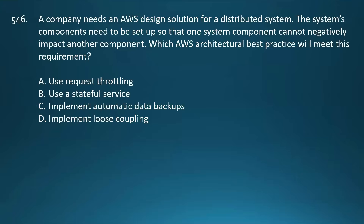A company needs an AWS design solution for a distributed system. The system's components need to be set up so that one component cannot negatively impact another. Which AWS architectural best practice will meet this requirement? Your options are: use request throttling; use a stateful service; implement automatic data backups; or implement loose coupling.